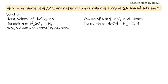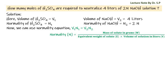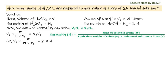Now we can use the normality equation: V1·N1 = V2·N2. We also know that normality N = (mass of solute in grams w) / (equivalent weight of solute E × volume of solution in liters V). Substituting, we get V1 × (w / (49 × V1)) = 2 × 4. We can cancel V1, where the equivalent weight of sulfuric acid is 49 because its molecular weight is 98 and it has 2 replaceable hydrogens.